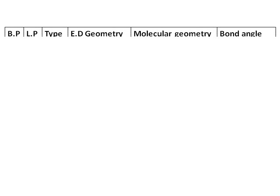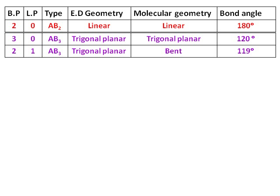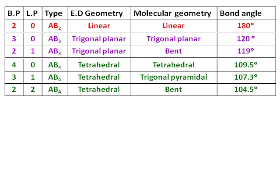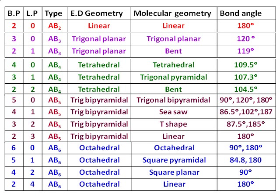Here is a consolidated list of everything learned so far. For linear geometry, there is one kind of bond angle. For trigonal planar, there are two. For tetrahedral, there are three. For trigonal bipyramidal, there are four, and for octahedral, again four. Keep this list in front of you when answering questions. Just memorize the angles with no lone pairs — for all other cases, the question will ask whether the angle deviates or not. The presence of a lone pair always changes the bond angle.